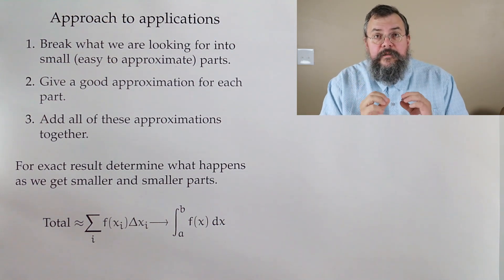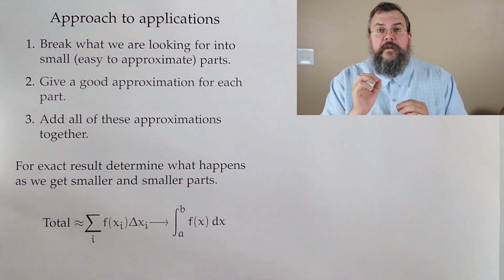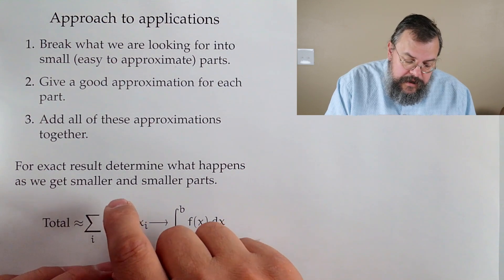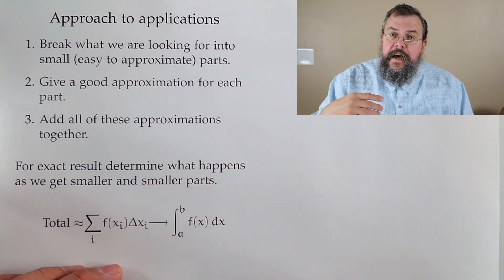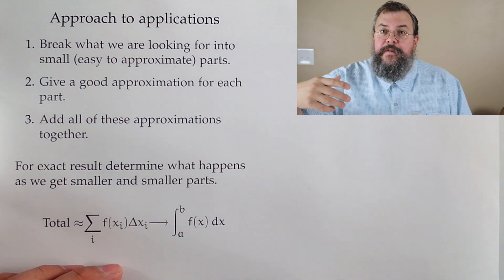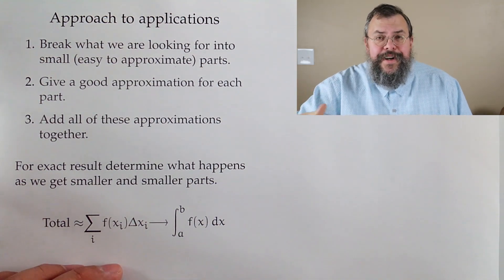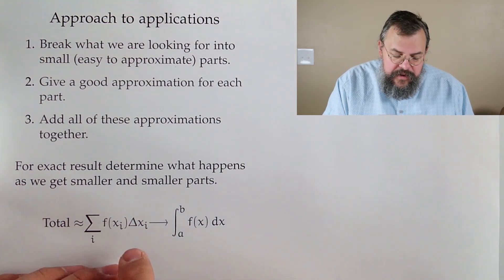But the idea here is that when we have our parts getting smaller and smaller, our error gets smaller and smaller. Not just our individual errors, in other words, our error for each piece, but our total error. And therefore, in the limit, in other words, as things get smaller and smaller.